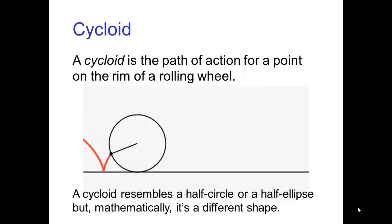Another curve that's related to circular arcs is the cycloid. A cycloid is the path of action for a point on the rim of a rolling wheel. The cycloid resembles a half-circle or a half-ellipse, but mathematically, it's actually a different shape.